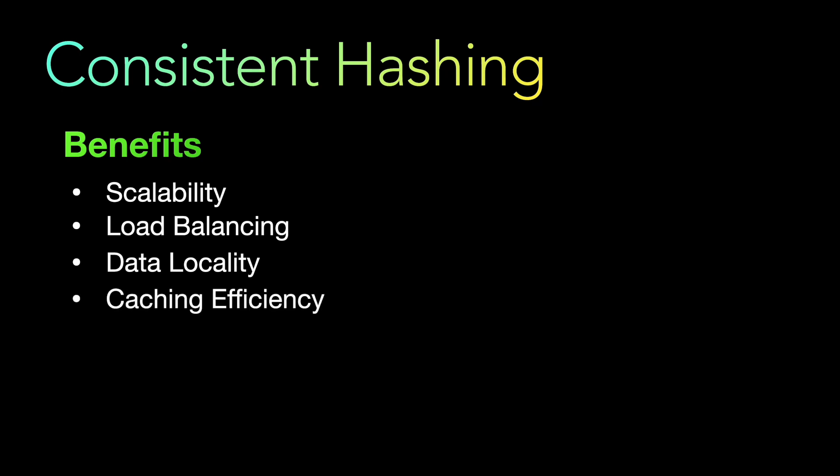Cache efficiency is another benefit. By using the same consistent hashing mechanism, cache nodes can efficiently determine which items to store and retrieve. Caches can be distributed across multiple nodes, and consistent hashing ensures that items are consistently mapped to the same cache node, maximizing cache hit rates and improving overall cache performance. Finally, fault tolerance: if a node fails or becomes unavailable, the data items that node was responsible for automatically get reassigned to neighboring nodes. This fault-tolerant mechanism helps maintain high system availability and prevents data loss or disruption.